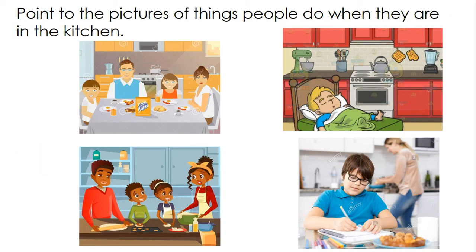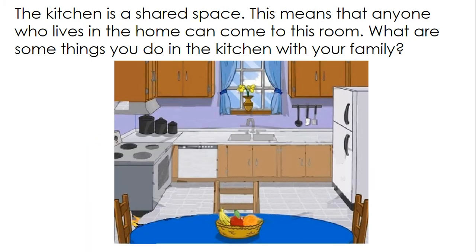Point to the pictures of things people do when they are in the kitchen. The first picture looks like they're eating. Do we eat in the kitchen? Yes, we do. The next picture is someone sleeping in the kitchen. We don't do that. The third picture shows they're cooking in the kitchen. Do we cook in the kitchen? Yes, we cook in the kitchen. And the last picture is a boy doing his homework. Do we do our homework in the kitchen? Yes, you can. But the person sleeping in the kitchen — not appropriate. We do not sleep in the kitchen. The kitchen is a shared space. This means that anyone who lives in the home can come to this room. What are some things you do in the kitchen with your family? Think about that question for homework. Talk to your family and your staff and find out and let them know what things you do in your kitchen.